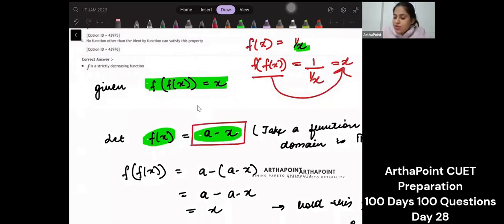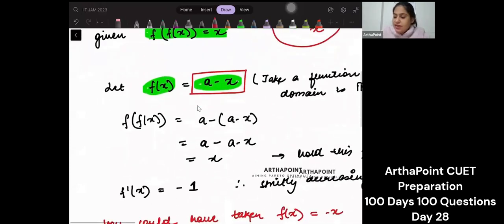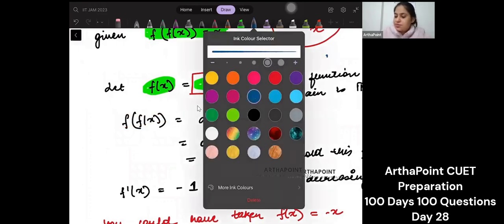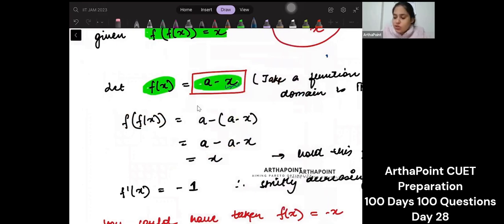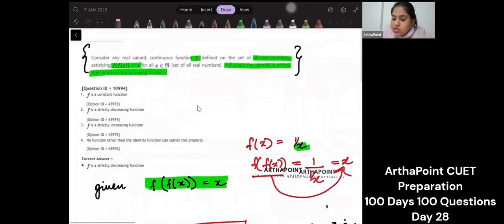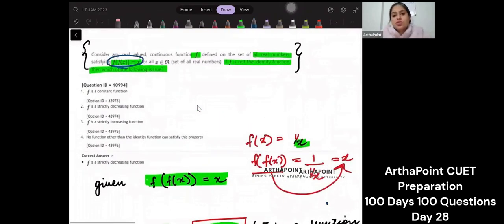If I take my function to be a minus x, then I will take f of f of x. Instead of x, I will replace it with the function a minus x and I will get back x. So you have to go ahead and you have to assume a function such that it follows whatever property is given to you.